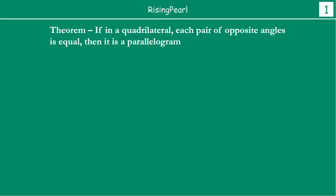Like we always do, Dostho, let us understand the theorem before we jump in to prove it. The theorem tells us that if in a quadrilateral each pair of opposite angles is equal, then we say that the quadrilateral is a parallelogram.